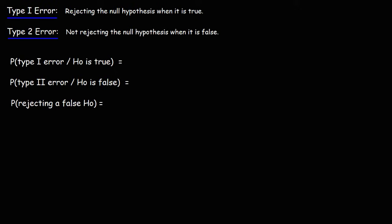In this video we're going to talk about the type 1 and type 2 error that you need to understand in a typical statistics course. The type 1 error occurs when you reject a null hypothesis when the null hypothesis is true. The type 2 error occurs when you fail to reject the null hypothesis when it's false.